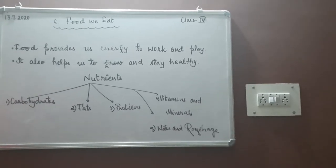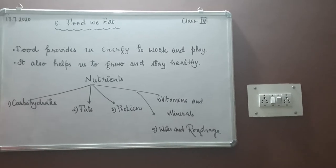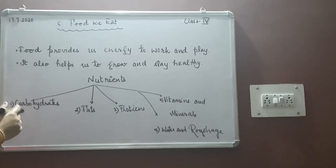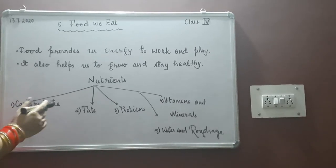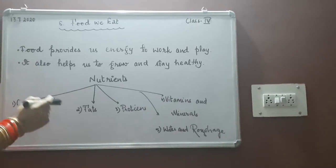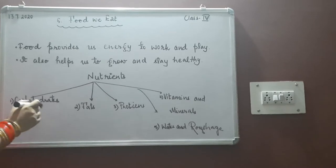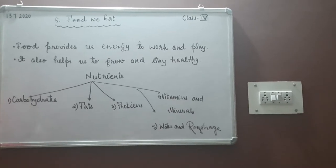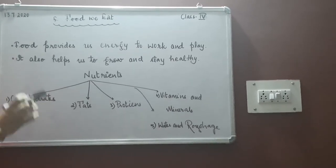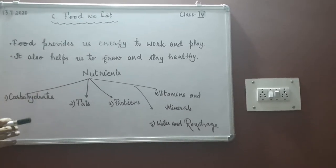So what are these nutrients? The different types of foods give our body all that is needed to perform different activities. These are called nutrients. Every food has a special nutrient, which is why we have to eat all types of food.